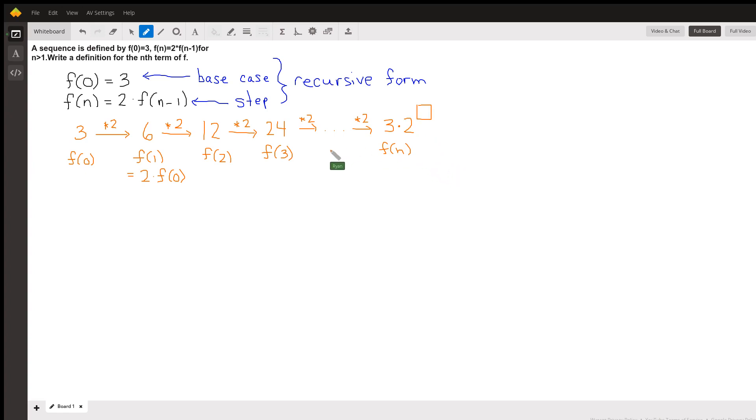So how many twos do we need to multiply by to get to the nth term? Well for f(1) we need to multiply by 2 once, for f(2) we had to multiply by 2 twice, for f(3) we had to do it 3 times, for f(n) we have to do it n times.